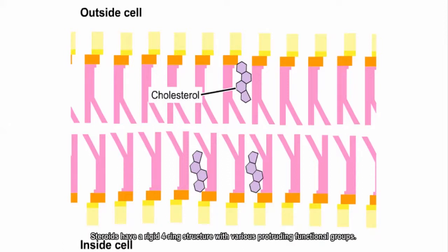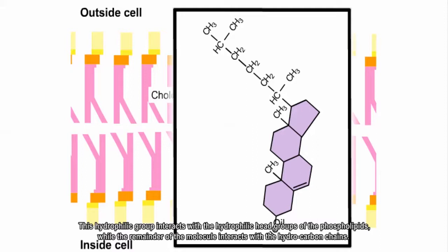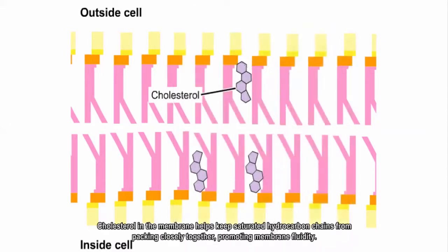Steroids have a rigid four-ring structure with various protruding functional groups. Cholesterol is hydrophobic except for a hydroxyl or OH group at one end. This hydrophilic group interacts with the hydrophilic head groups of the phospholipids, while the remainder of the molecule interacts with the hydrocarbon chains. Cholesterol in the membrane helps keep saturated hydrocarbon chains from packing closely together, promoting membrane fluidity.